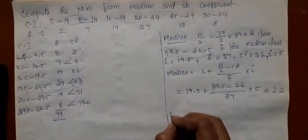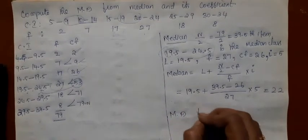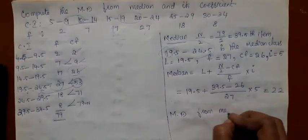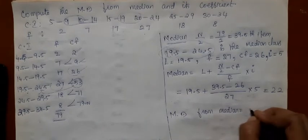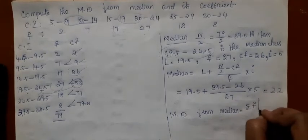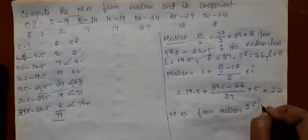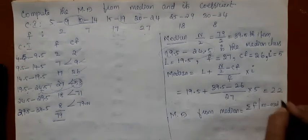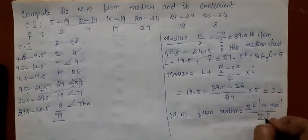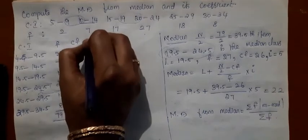Now we should compute mean deviation from median. The formula is summation F into modulus of M minus median divided by summation F. So you should have a column M now.